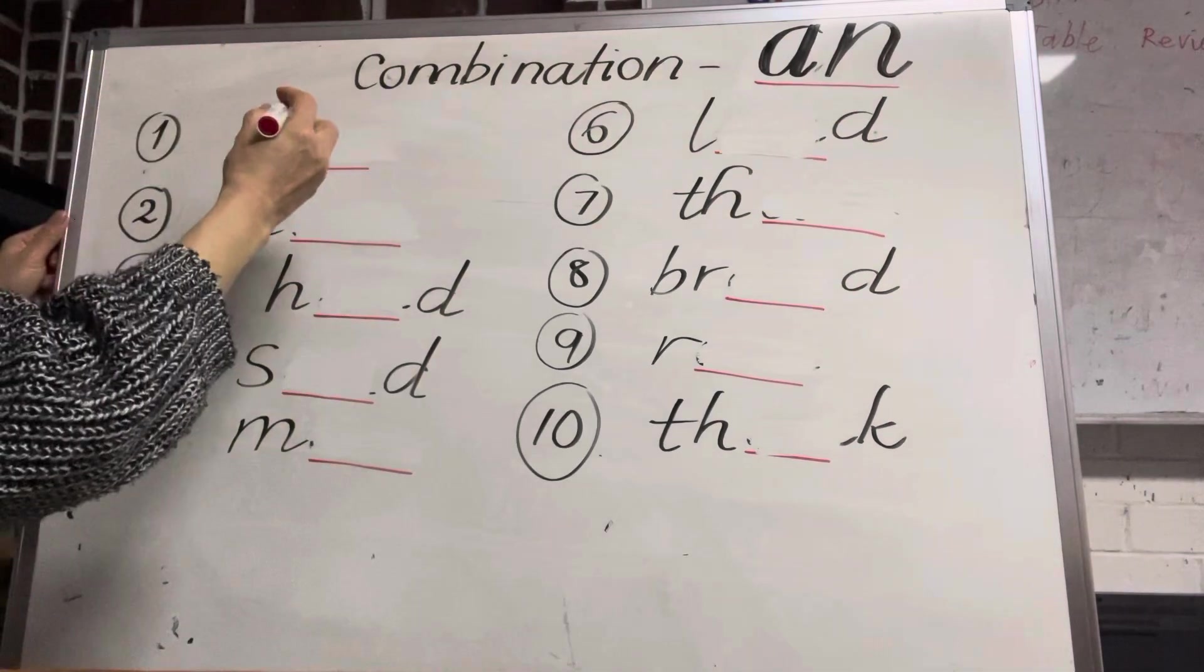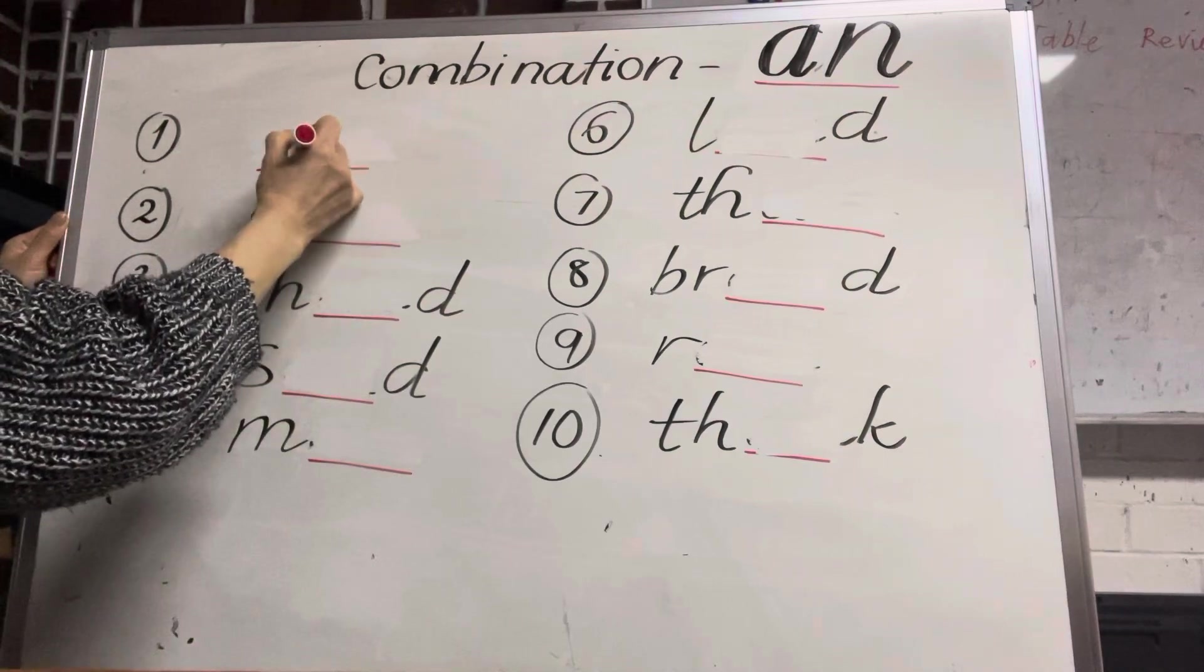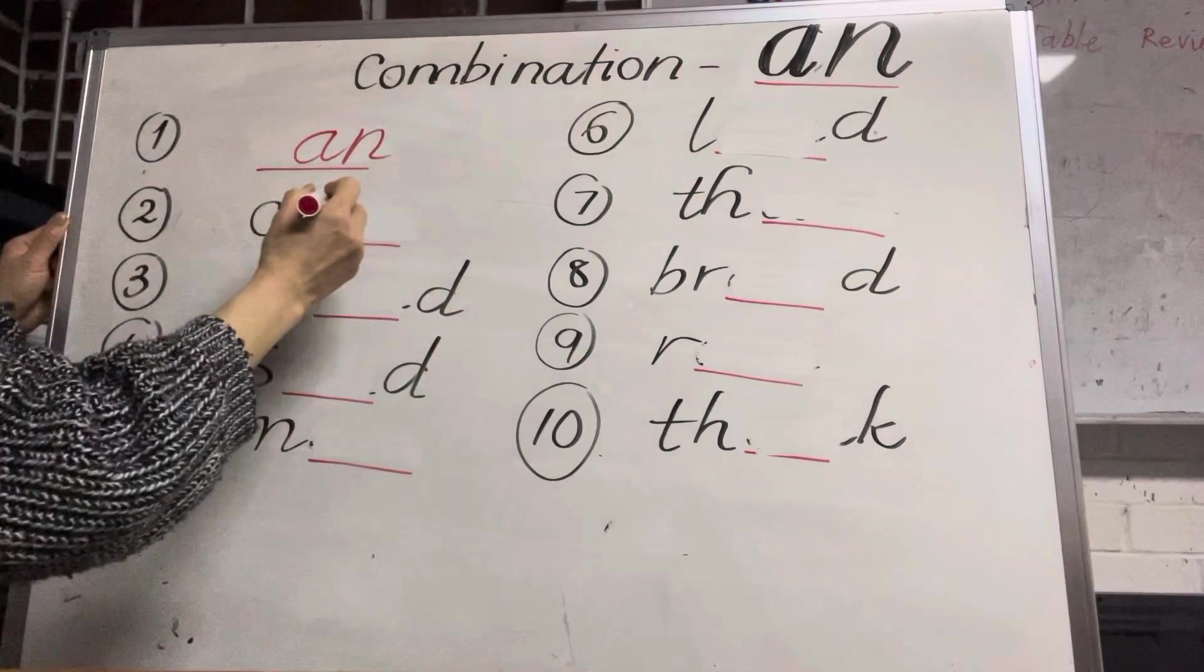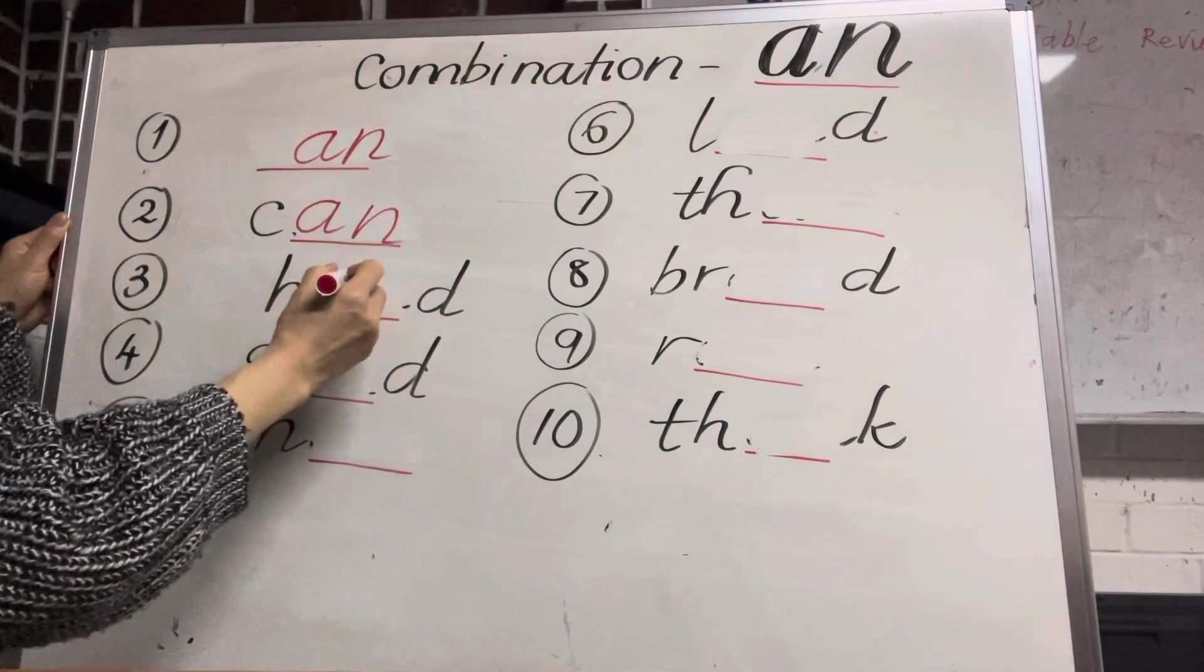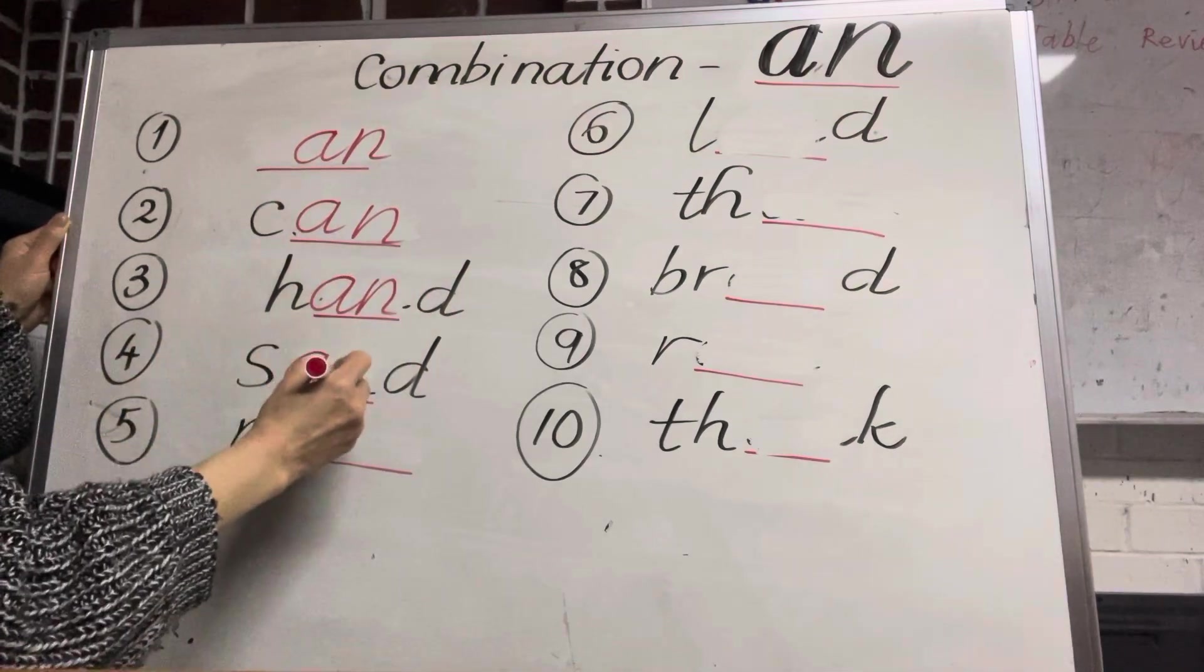So what's the first word? Can. What letters are missing? A and N. Can. What's missing? A and N. Hand. What's missing? A and N. Sand. What's missing? A and N. Easy. Man. What's missing?